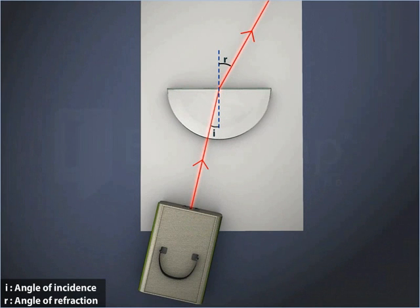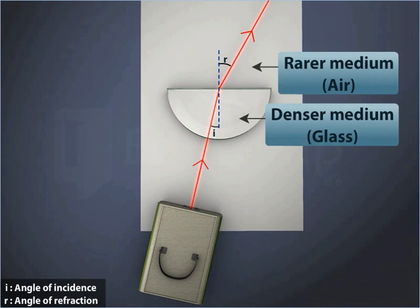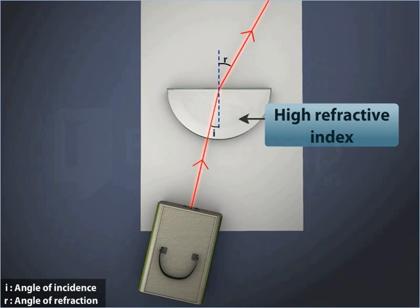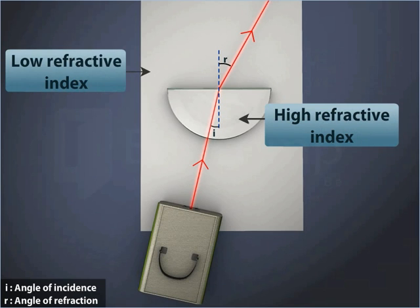This is because, as the light ray travels from the denser to the rarer medium, that is, from the medium of high refractive index to the medium of low refractive index, it refracts away from the normal.